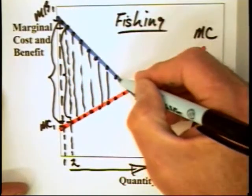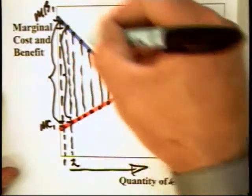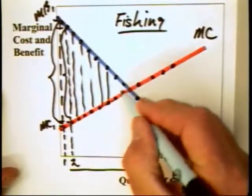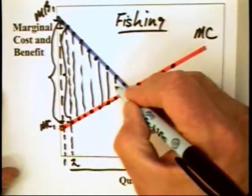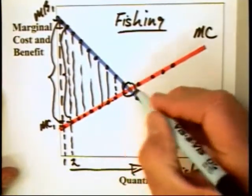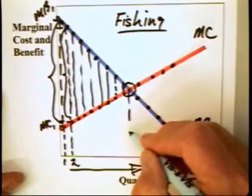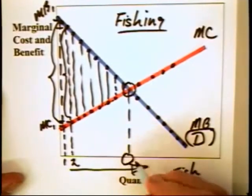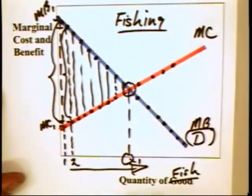In every case along here, the marginal value is above the marginal cost of producing. There is a gap between those two, which means total welfare must, in fact, be going up until you reach a quantity of fishing or fish caught equal to Q1.